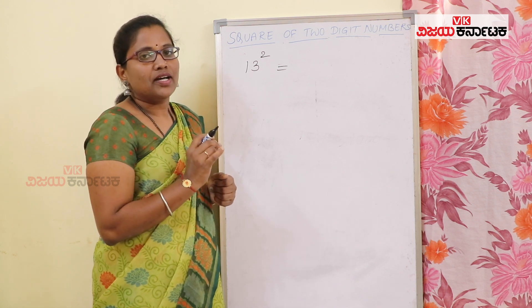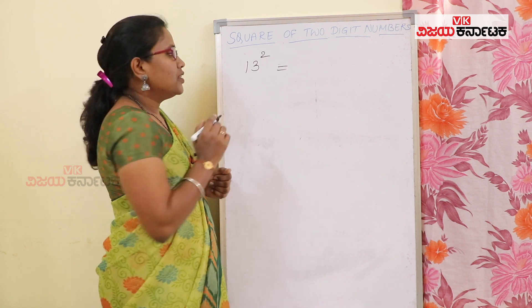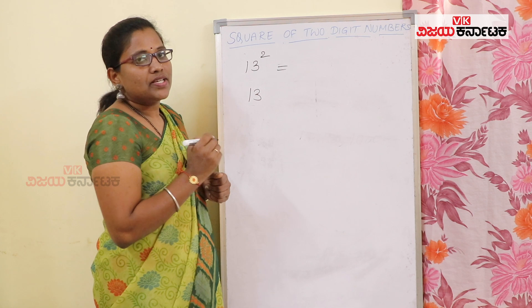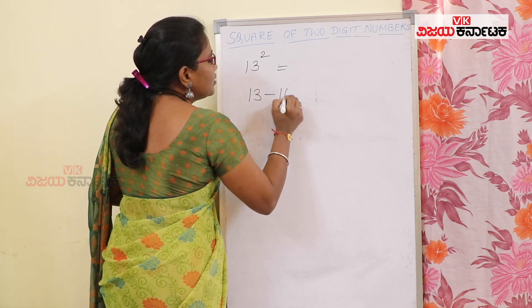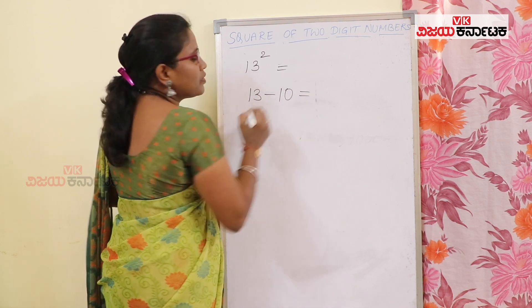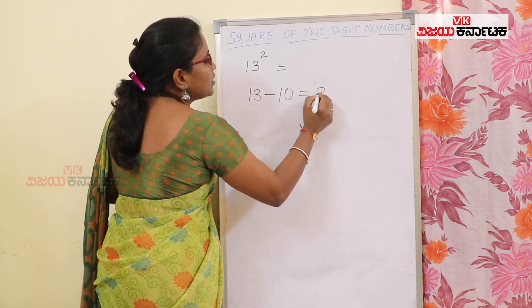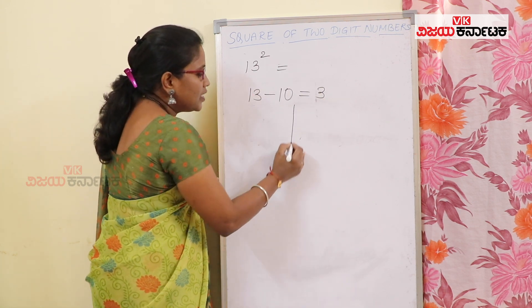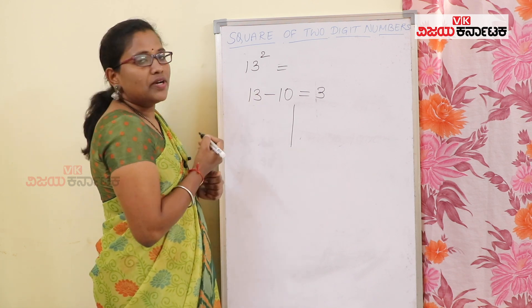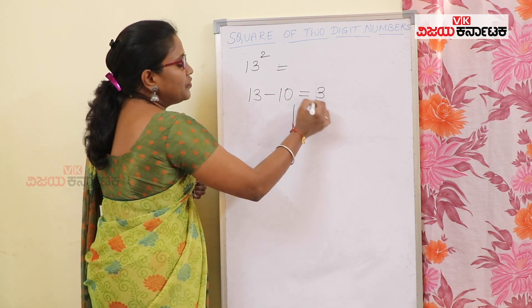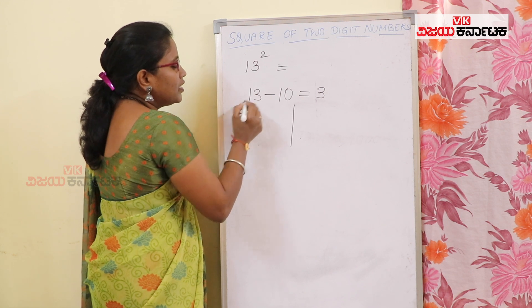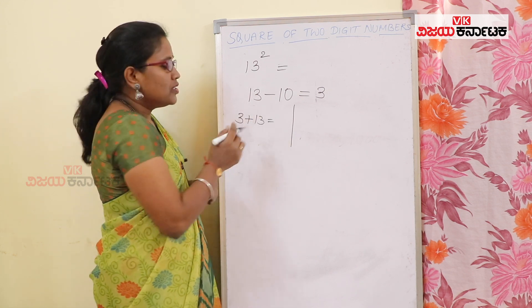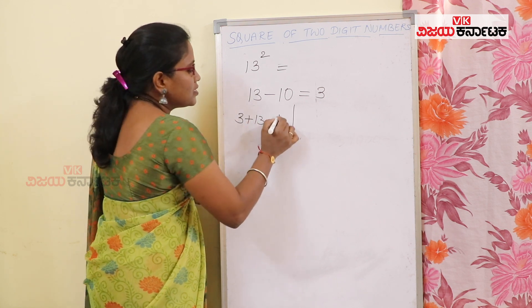The result is n. Let's add the result. The difference is n. So 13 plus 3 is 16.